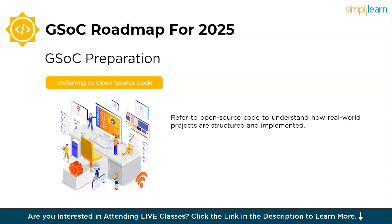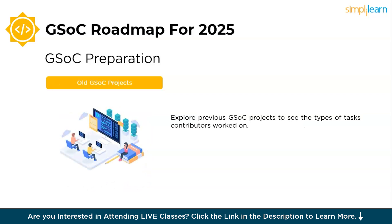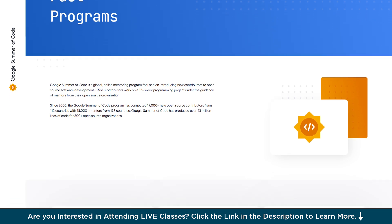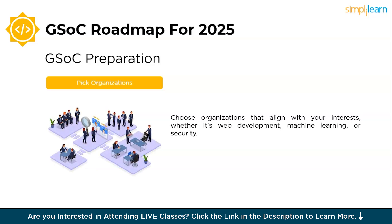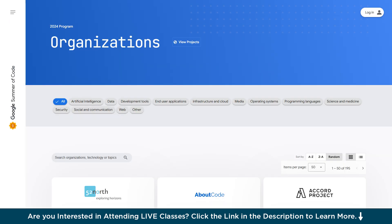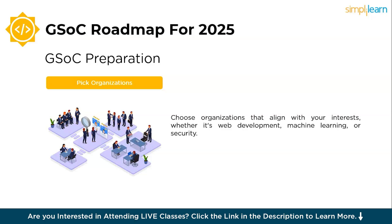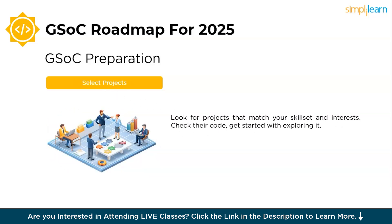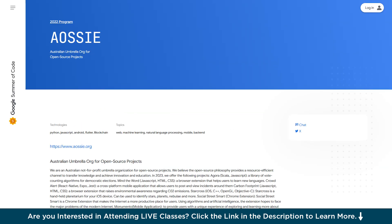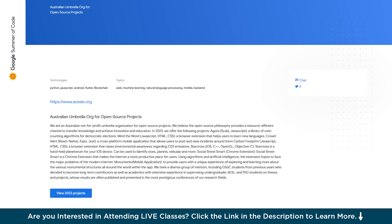Next is referring to open-source code. Refer to open-source code to understand how real-world projects are structured and implemented. Analyze the codebase to learn best practices, but make sure to build your own home projects to reinforce your learning. Next, explore prior GSOC projects. Browse various GSOC projects to see the types of tasks contributors worked on. You can also use older projects as learning resources or inspiration to build similar projects on your own. Then pick organizations aligned with your interests — whether it's web development, machine learning, or cybersecurity. Working on projects you're passionate about will keep you motivated and make the learning process enjoyable.